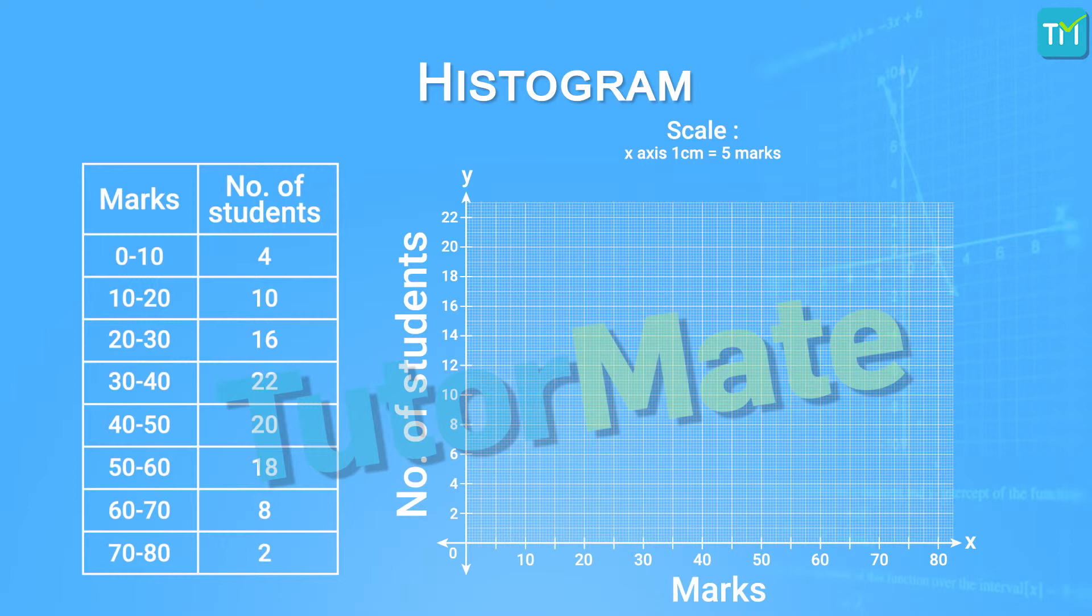Now whenever we are choosing the scale for our axis, we have to ensure that the graph is drawn in such a way that it covers maximum area of the graph paper while giving a neat and clean representation of the data that we have. We'll write the scale on the y-axis as 1 centimeter equals 2 students again on the corner. Also, the title for the y-axis is the frequency of the class intervals, which is essentially the number of students. With our axis and scale in place, let's start drawing the histogram.